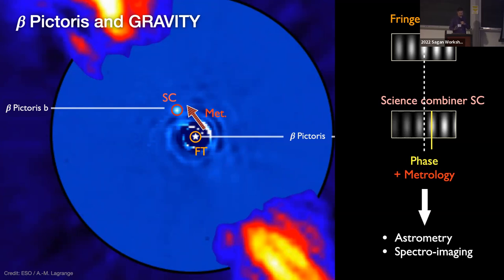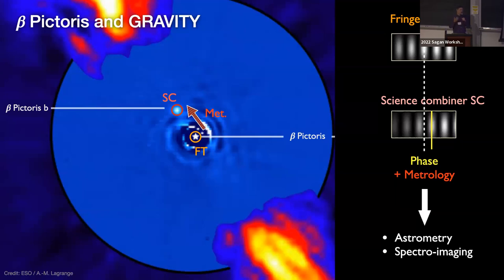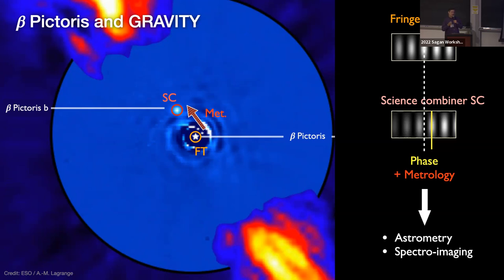GRAVITY has an important advantage over adaptive optics: it can use the coherence of the light from the planet — because the planet is angularly very small, so its light is very coherent — to separate the planet from the cloud of speckles of the primary star. For this reason, interferometry is in principle more sensitive to point-like sources like planets in the vicinity of bright sources.